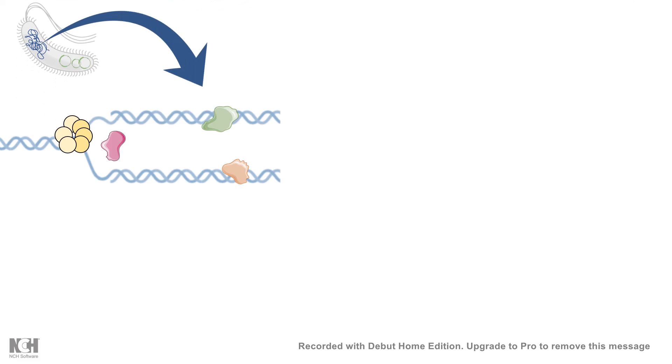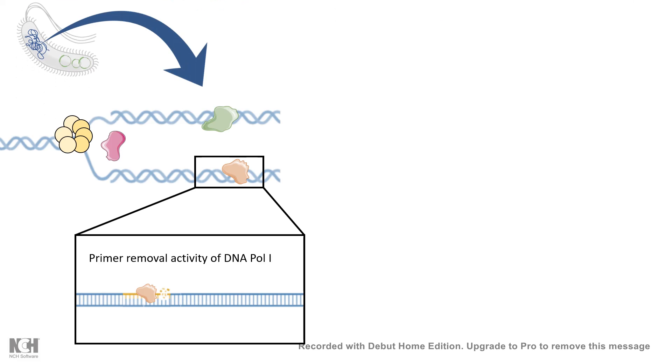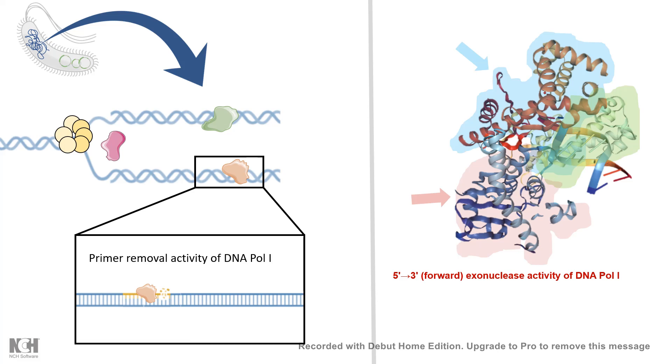If you remember the replication process in E. coli, then we can understand the DNA polymerase 1 has a primer removal activity, and the primer removal activity of DNA polymerase 1 is based on its 5' to 3' exonuclease activity, the forward exonuclease activity.